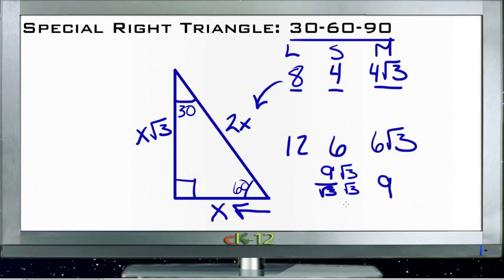√3 times √3 would be 3 on the denominator, 9√3 on the numerator. Since 9 and 3 reduce, we'd end up with 3√3. So our small side would be 3√3 and our large side would be twice that, or 6√3.